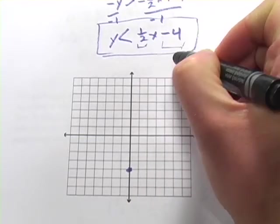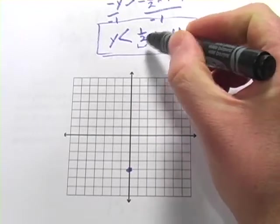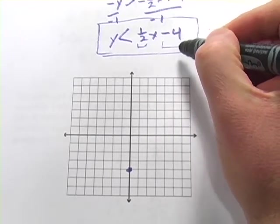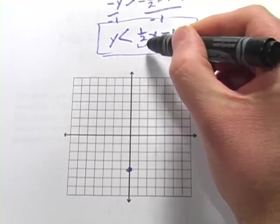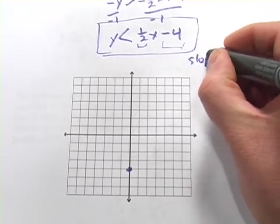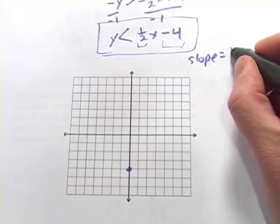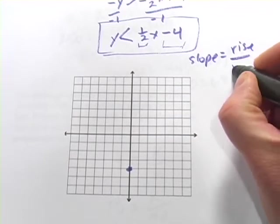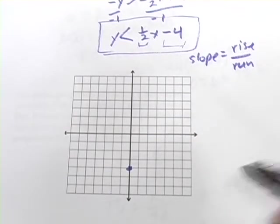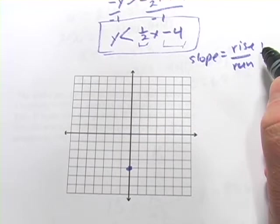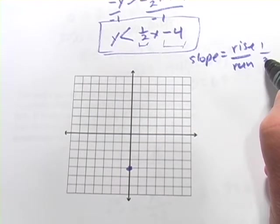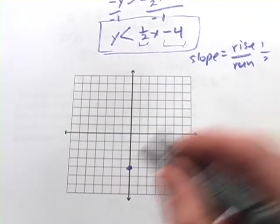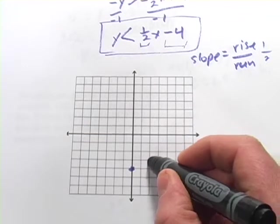Now, this number that's multiplied by x, the m in our y equals mx plus b form, is the slope. And slope is the rise over the run. So if I've got a 1 over a 2, that means it goes up 1 for every 2 it goes to the right.